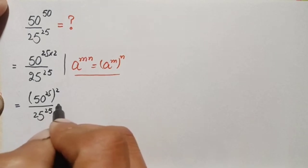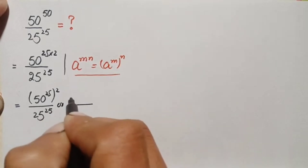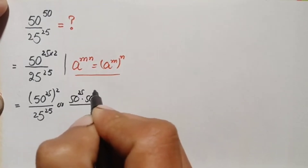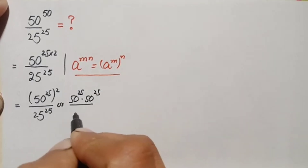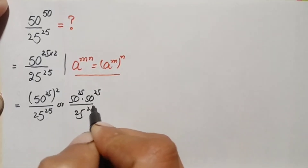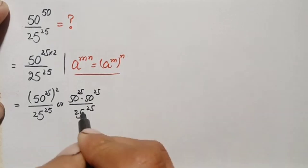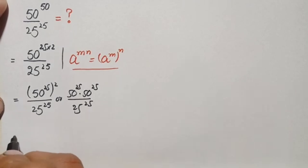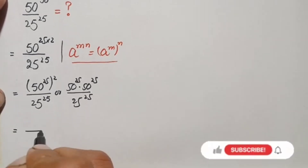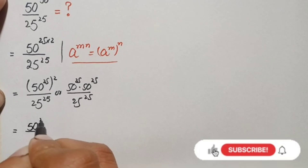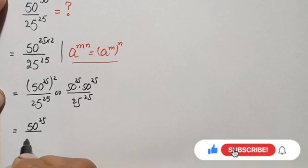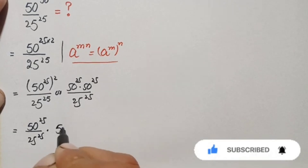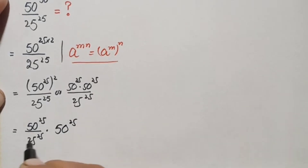Since there is a square over this number, we can write it two times as 50 raised to power 25 times 50 raised to power 25, divided by 25 raised to power 25. Both numbers share the same power, so we will separate them and divide: this becomes 50 raised to power 25 divided by 25 raised to power 25, times 50 raised to power 25.